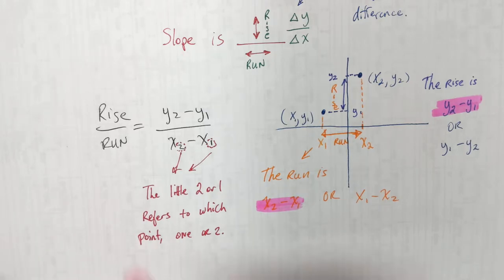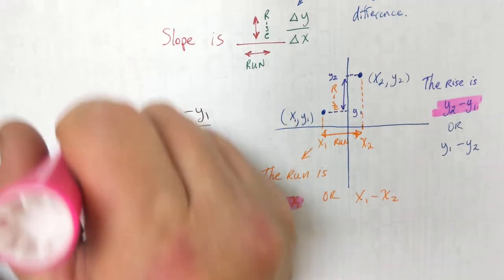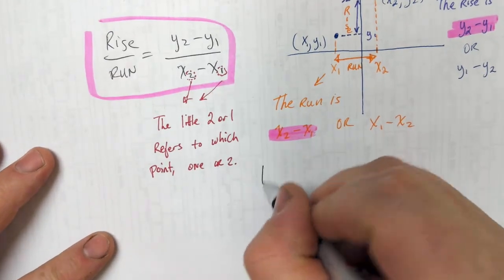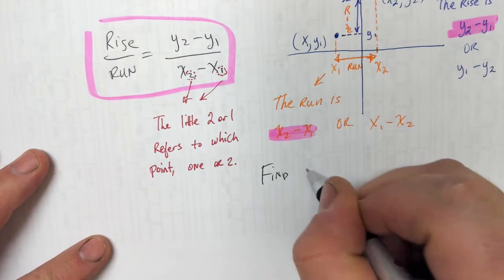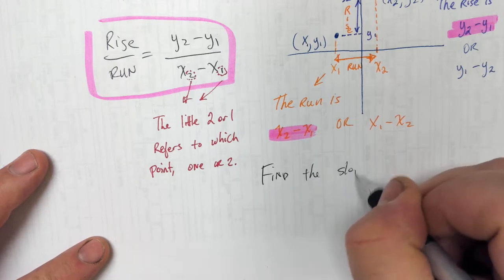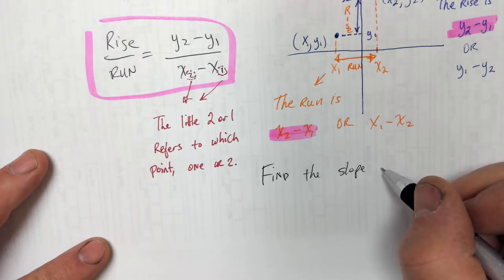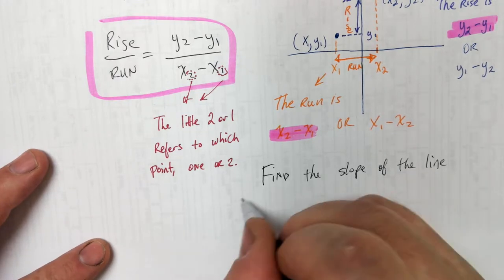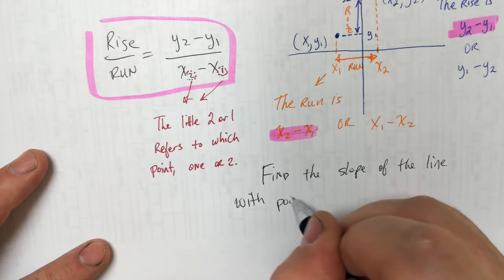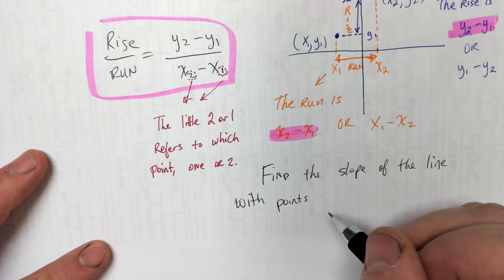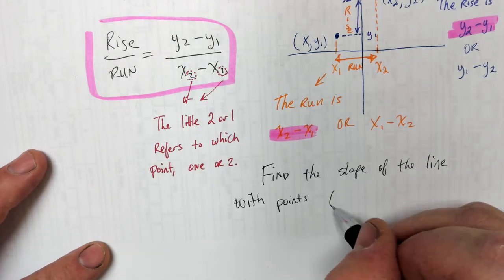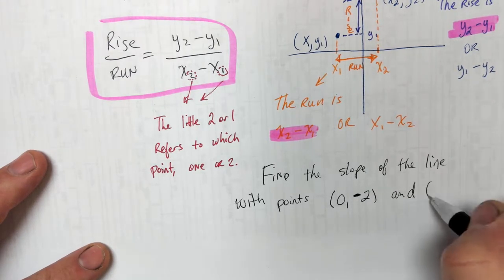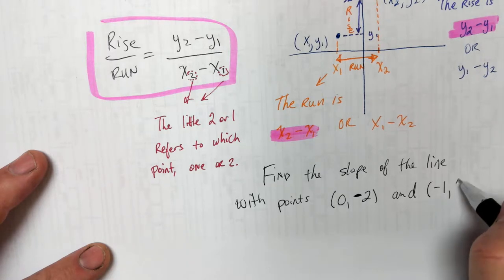This is the formula right here. Slope is rise over run. So let's find the slope. Find the slope of the line with points — we'll throw a couple negatives in there — 0, negative 2 and negative 1, 7.